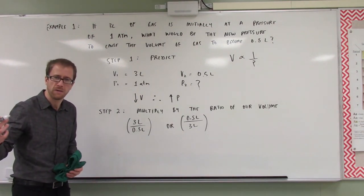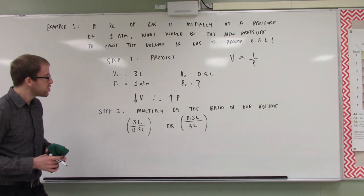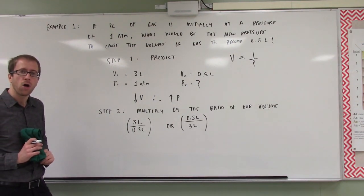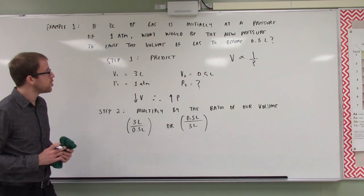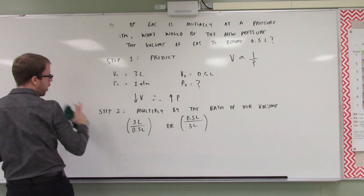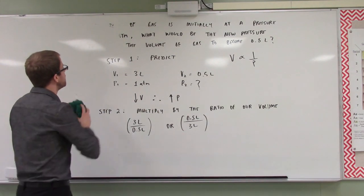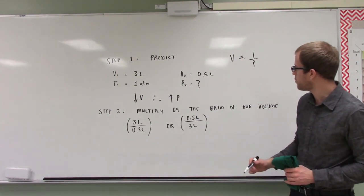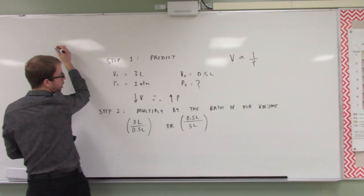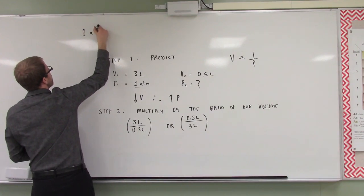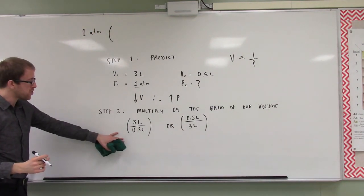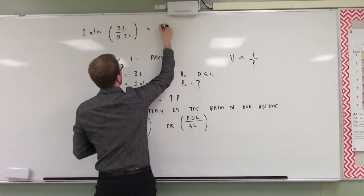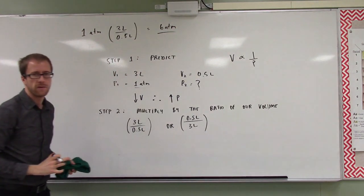What's three divided by 0.5? It's six. This makes perfect sense — by decreasing our volume by a factor of six, we are going to increase our pressure by a factor of six. So in the final math, we multiply the pressure by the ratio of our volume. Our pressure was 1 atm, and we multiply by three over 0.5 because we know our pressure should go up. As a result, we find that our new pressure is 6 atm. That is our final answer.